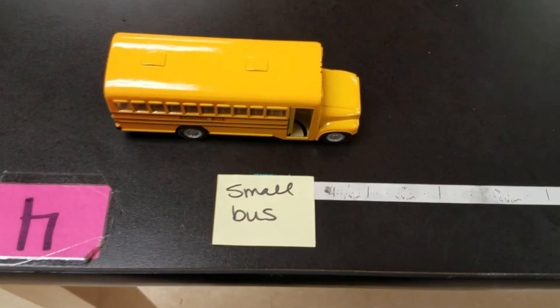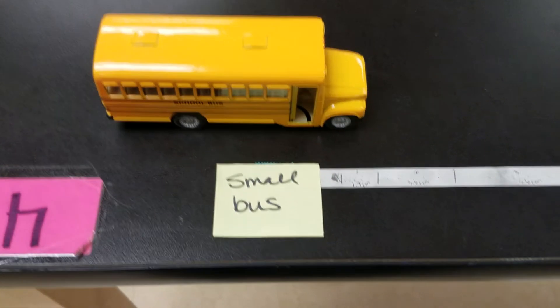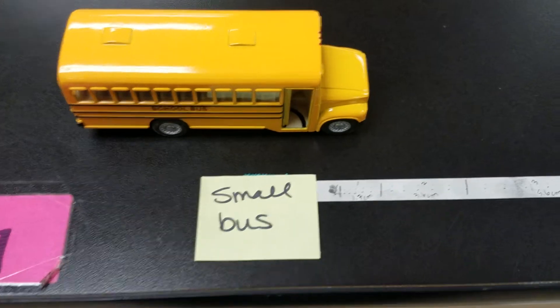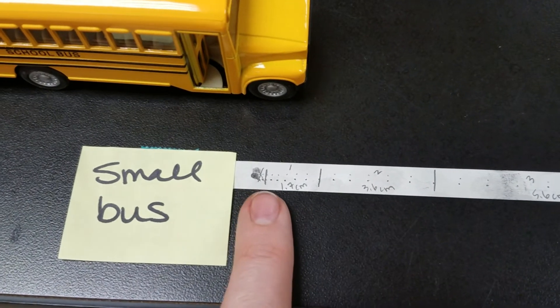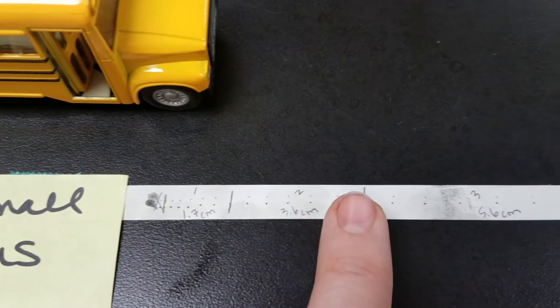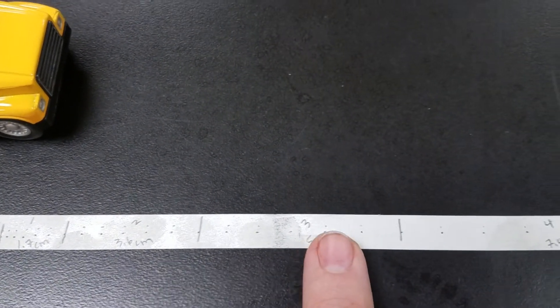So we're going to start with the small bus and you have a set of data charts that is labeled small bus. If you look along the tape here you can see that I have marked one, two, three, four, and so on.